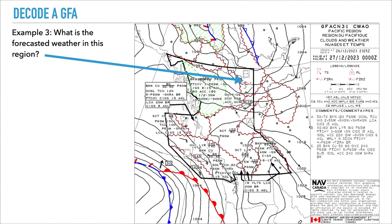What is the forecasted weather in this region? We have the squiggly lines that depict the clouds, as well as the symbol for freezing rain. However, there's no space for the forecast to write anything, so you'll notice the letter Bravo.